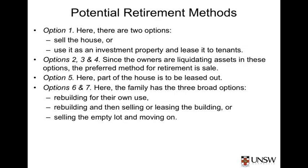Here are some potential options. Option 1: If the house is uncomfortable because it's either too large or too small, there are two options for retirement of the building — put it up for sale, or use the house as an investment property and lease it to tenants. For options 2, 3, and 4, the owners are liquidating their assets, and so the preferred method of retirement is most probably sale — recognising that in option 4, where they are under financial stress, that may be a bit more urgent. Option 5: The house is to be reused or leased as accommodation. In options 6 or 7, if the building has been destroyed or reached the end of its life, the family has three broad options: clearing the current site and rebuilding in the current location, rebuilding and then selling or leasing the building while moving to another location, or selling the current site as an empty lot and moving on to a new location.